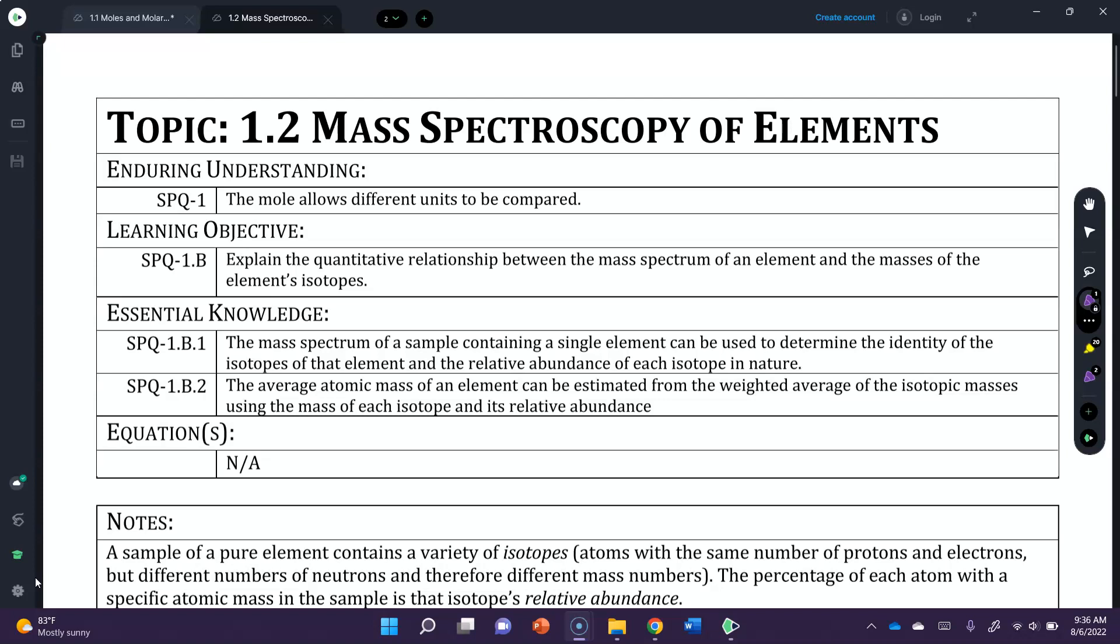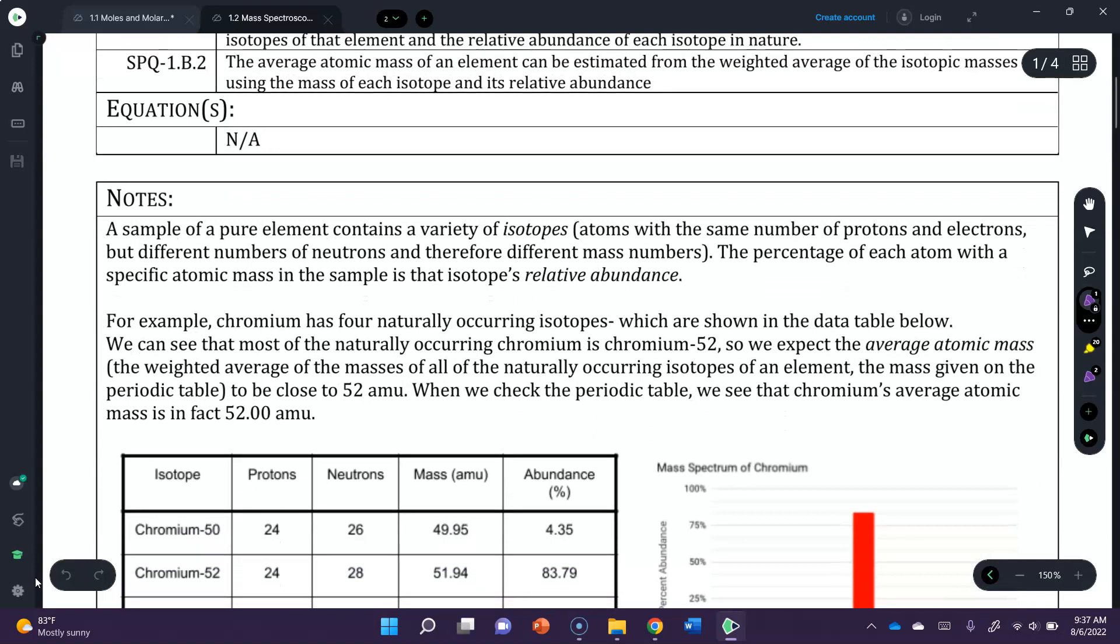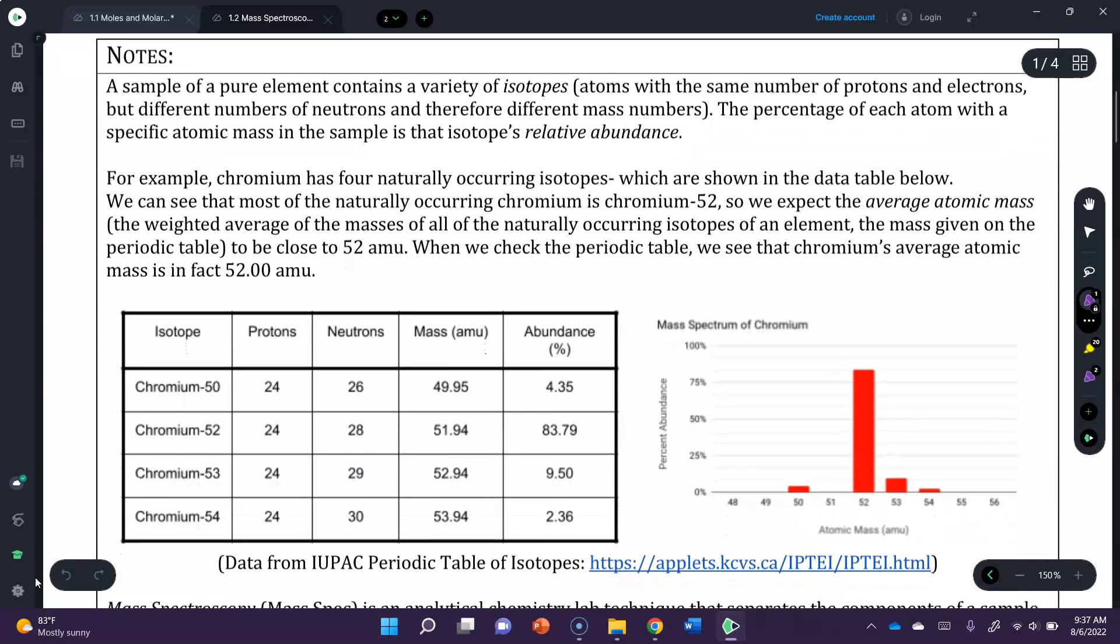Also that the average atomic mass of an element can be estimated from the weighted average of the isotopic masses using the mass of each isotope and its relative abundance. And that's actually how we get them on the periodic table. So let's dive into this and see how this actually happens. Now again, some of this is probably a review, but it never hurts to go through it again and make sure we are all on the same page.